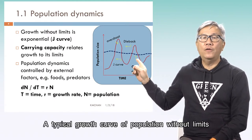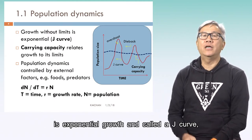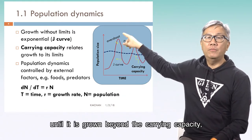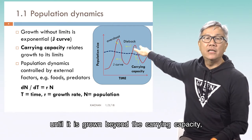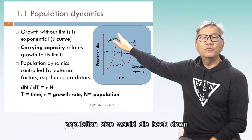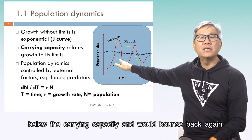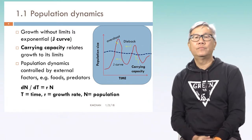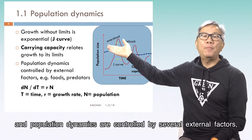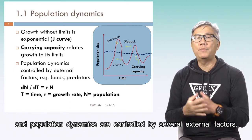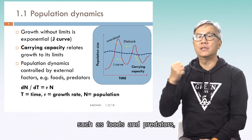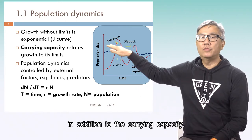A typical growth curve of population without limits is exponential growth, called a J-curve, until it grows beyond the carrying capacity. After a bit of overshooting, population size would die back down below the carrying capacity and bounce back again. Over time, population size reaches equilibrium, controlled by external factors such as food and predators, in addition to the carrying capacity.